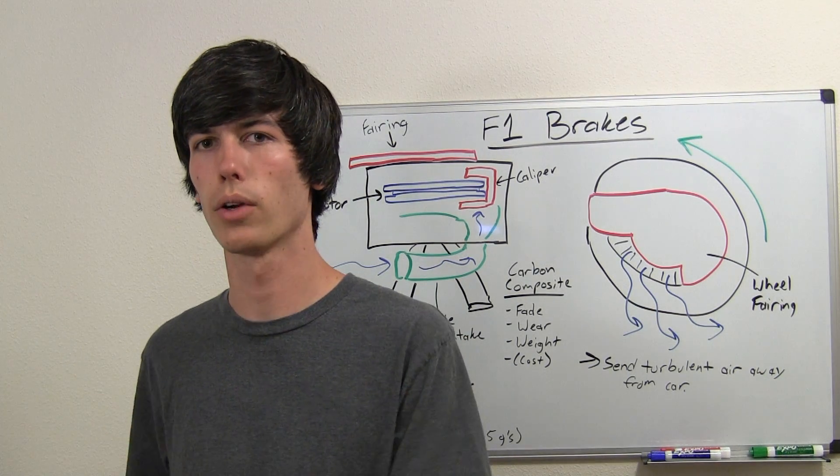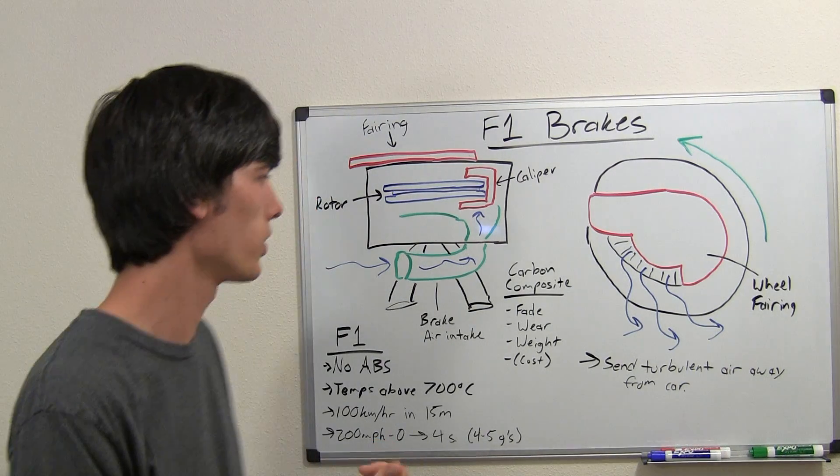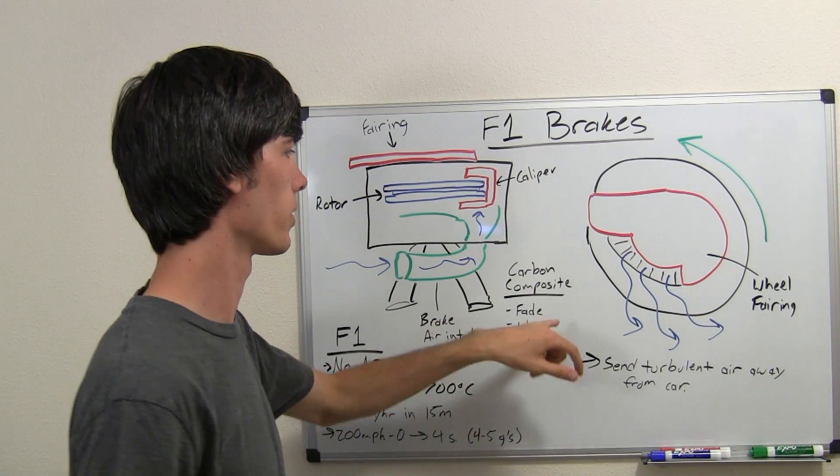Now Formula One brakes are similar to that on road cars in the fact that they use disc brakes. However there are several key changes that they make. One of that being the material.